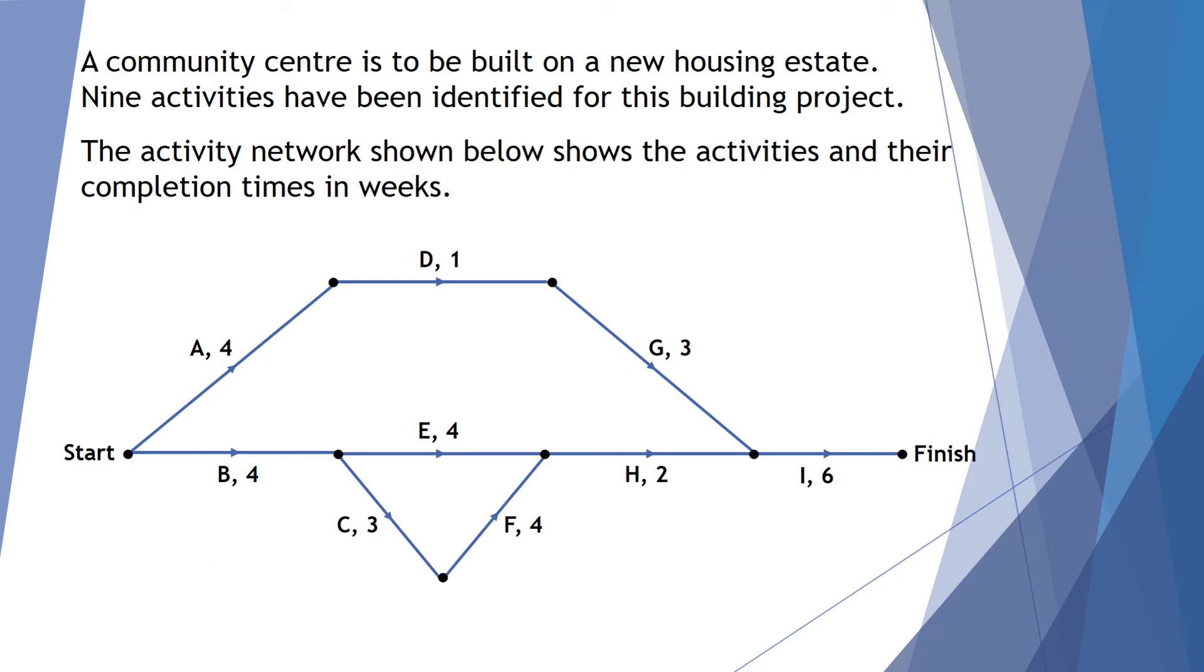A community center is to be built on a new housing estate. Nine activities have to be identified for this building project. So we've got one, two, three, four, five, six, seven, eight, nine activities. The activity network shown below shows the activities and their completion times in weeks.